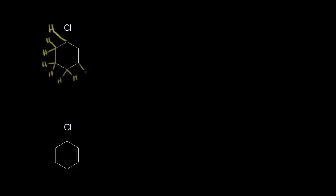Let's do a ring example. I'll draw out the hydrogens on the molecule. We have two hydrogens on this carbon, two hydrogens on this carbon, all the way around the ring. All of these carbons highlighted in magenta have two hydrogens bonded to them — that's two of the same thing — so there's no way those are going to be chiral centers.